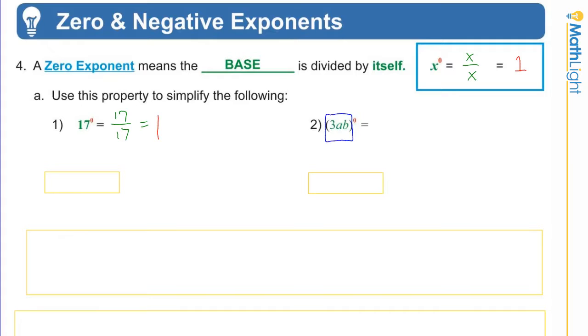Now remember, a key to exponents is understanding what is and is not the base. Because you have a parenthesis here and that exponent right next to the parentheses, anything in the parentheses is the base. So if I were to write the rule step, I would write 3ab divided by 3ab, and that happens to be 1, right? 3ab divided by 3ab.